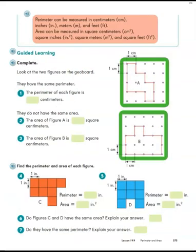Perimeter can be measured in centimeters, inches, meters, and feet. Area can be measured in square centimeters, square inches, square meters, and square feet.